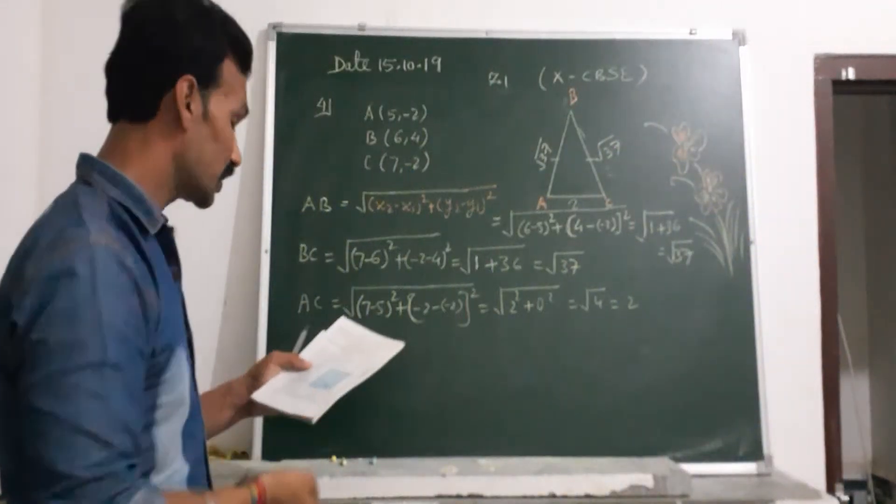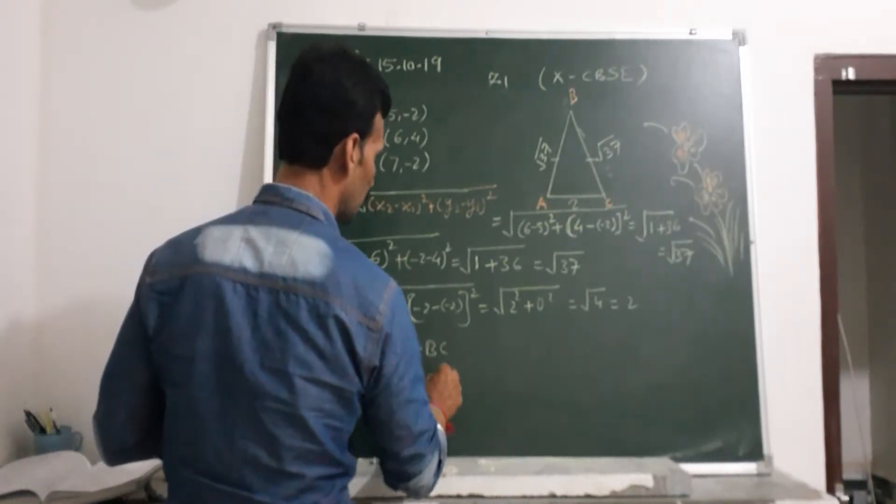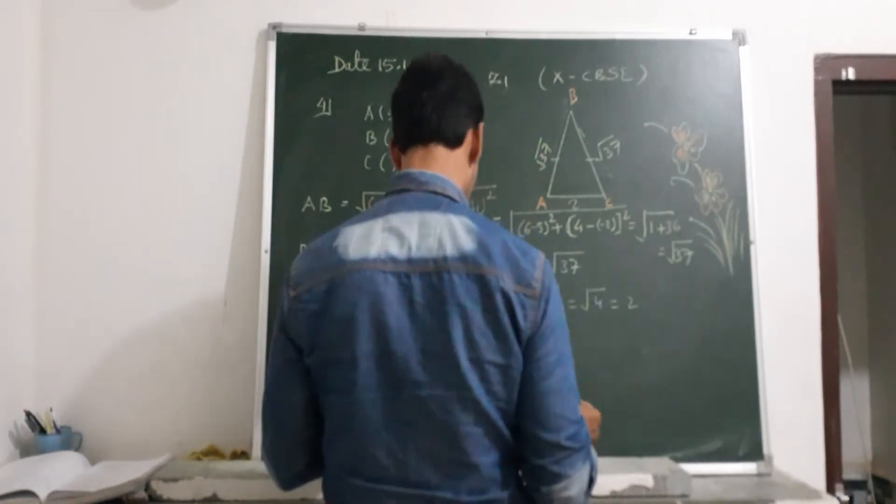So if you check it, is it an isosceles point? Yes, because two sides are equal. We have seen AB equal to BC. Therefore, ABC is an isosceles triangle.